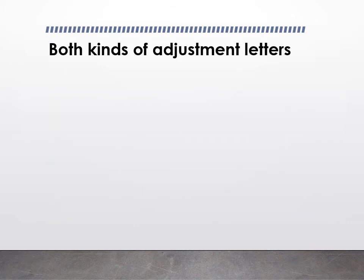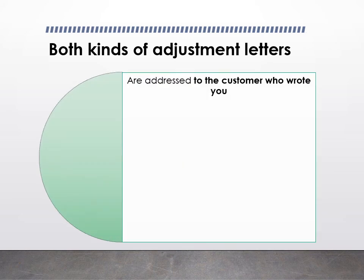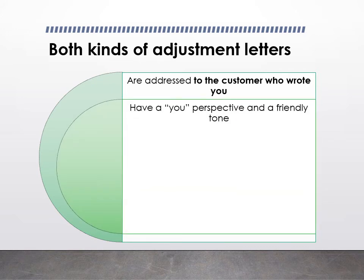Here are some general tips for both kinds of adjustment letters. An individual took the time to write a claim letter to you, so when you write back, you're writing to that person. Never address an adjustment letter to 'Whom It May Concern' or 'Valued Customer' — nothing would make someone feel less valued. Address the person by name. Remember that even though you're explaining your perspective, you need an orientation toward the audience, so don't go into detail about your internal organization's business or politics.